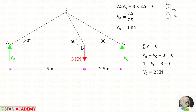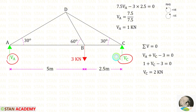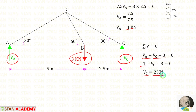Now let us apply sigma V equals 0 to find VC. VA and VC are acting upwards, so both are positive. The load 3 kilo Newton is acting downwards, so it is negative. Applying the value of VA which is 1, finally for VC we get 2 kilo Newton.